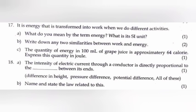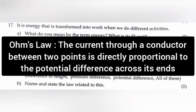Question 18. A: The intensity of electric current through a conductor is directly proportional to the dash between its ends. Answer: Potential difference. B: Name and state the law related to this. Answer: Ohm's law. The current through a conductor between two points is directly proportional to the potential difference across its ends.